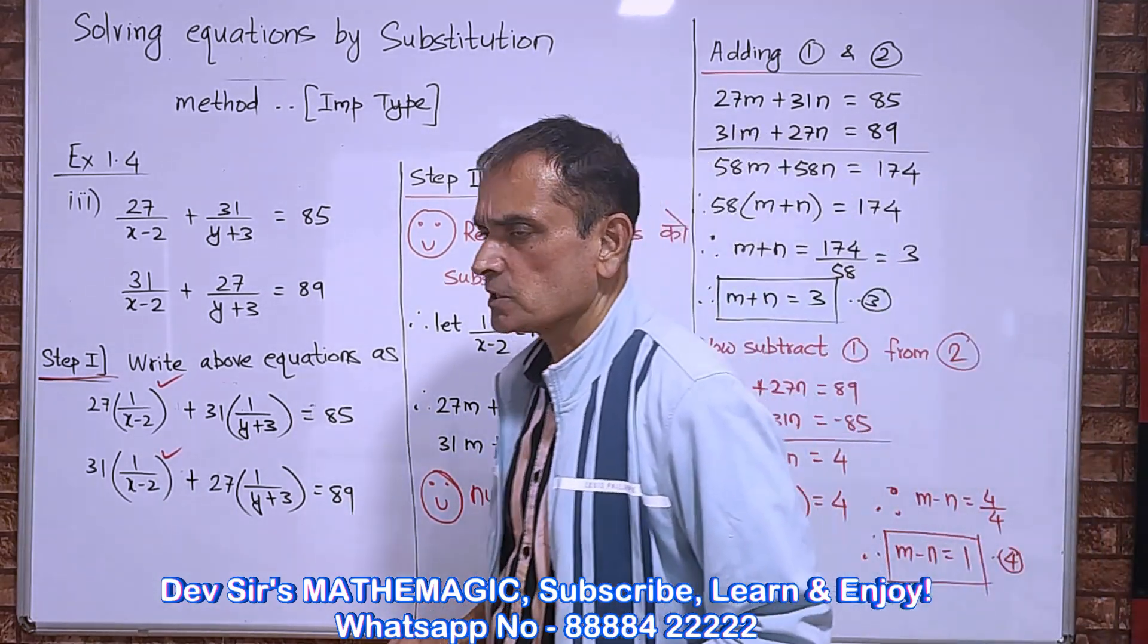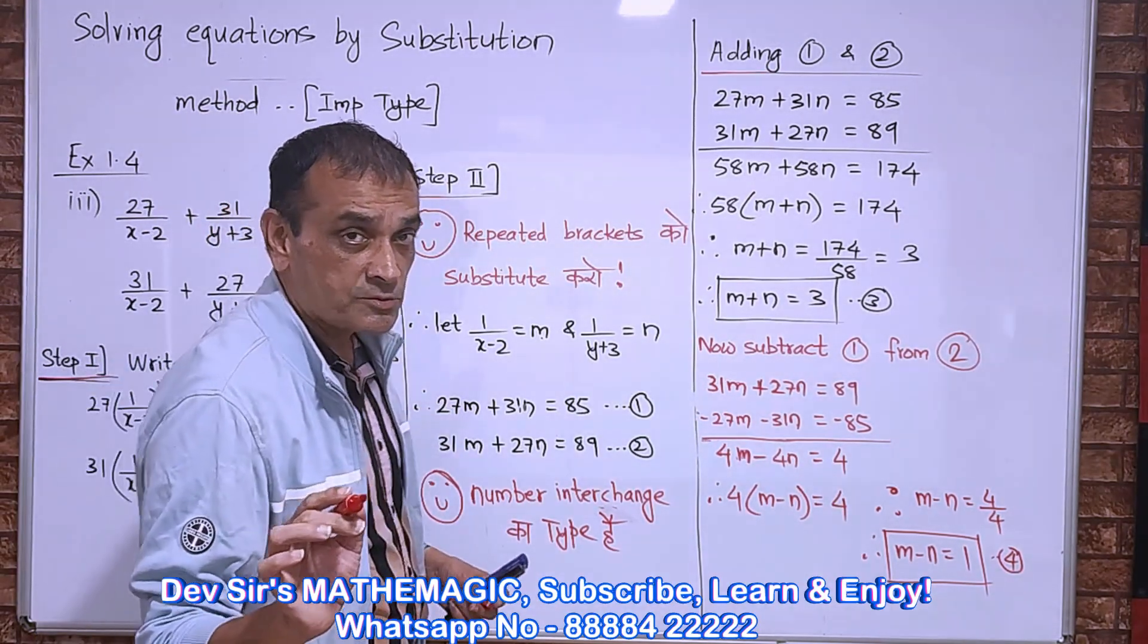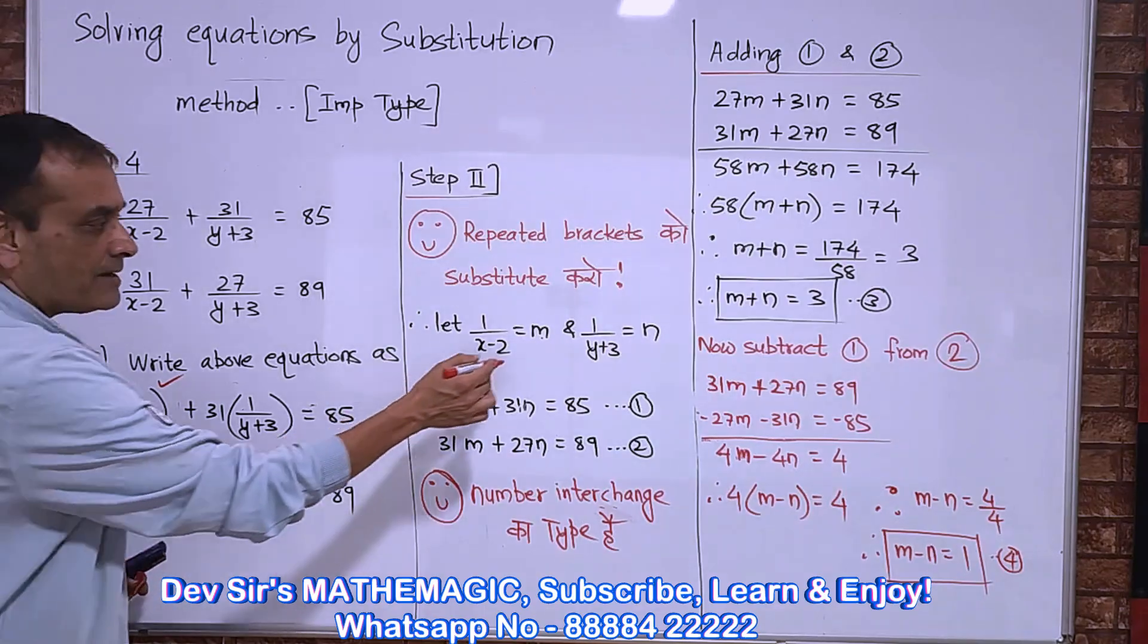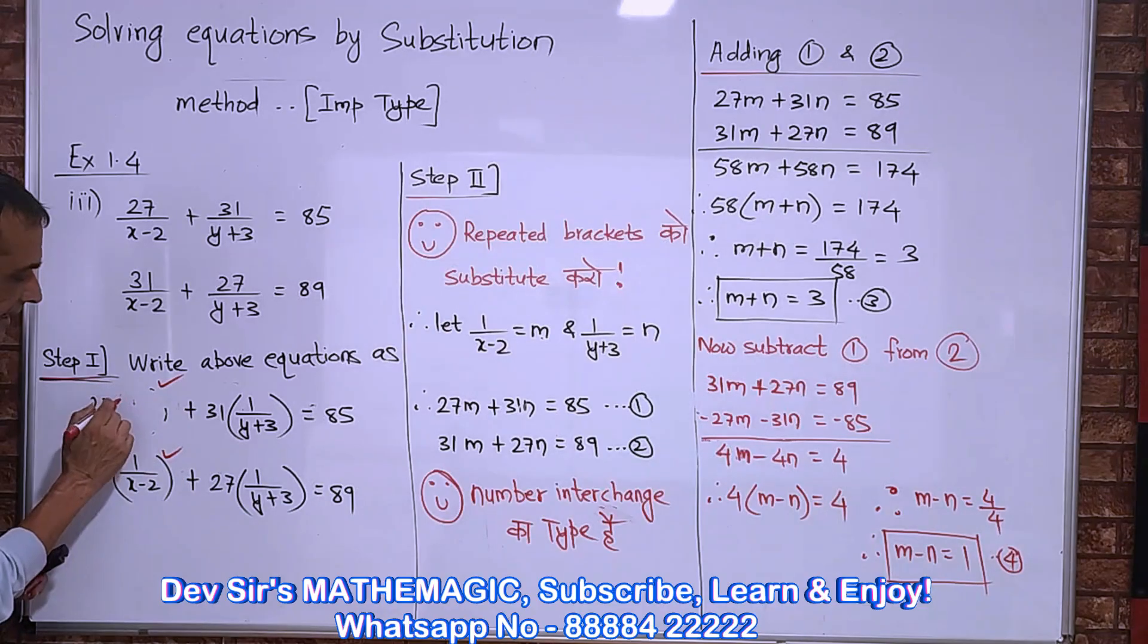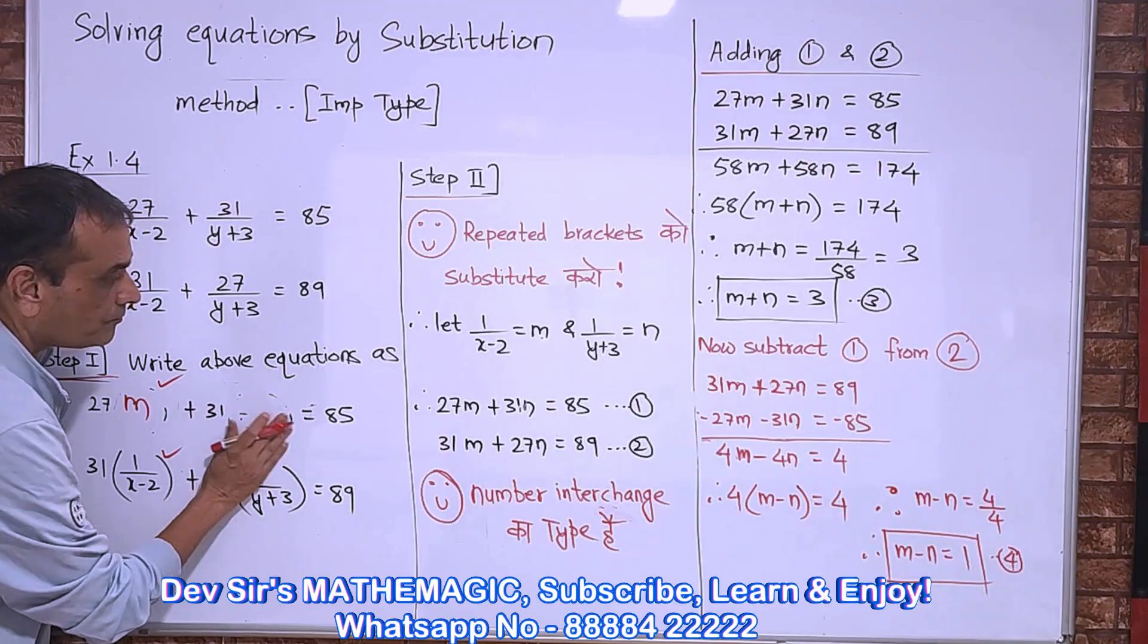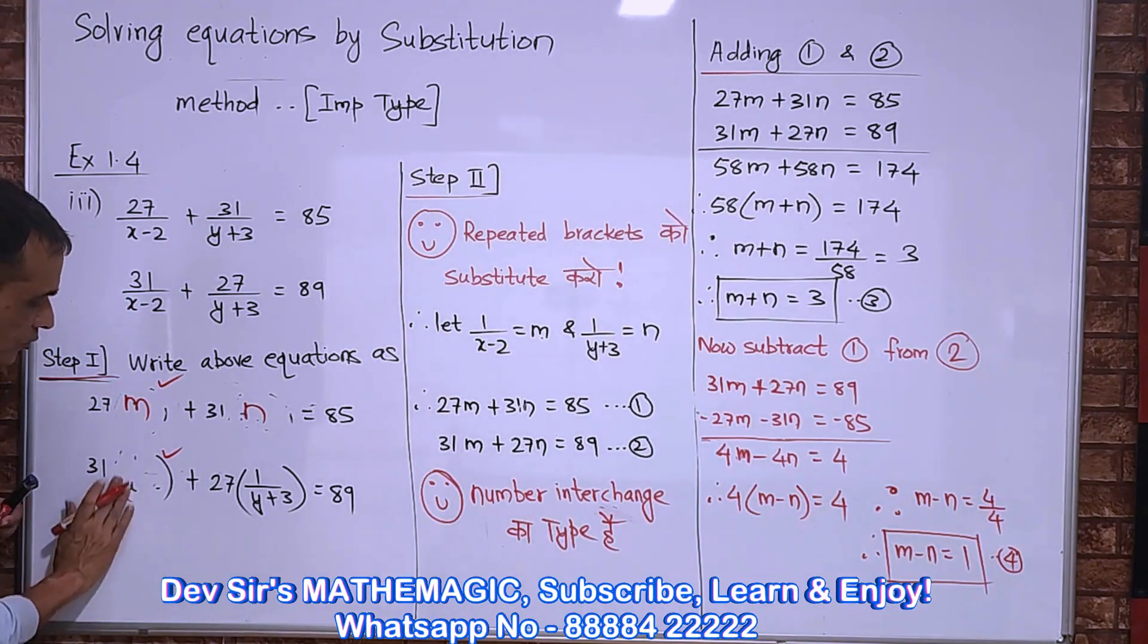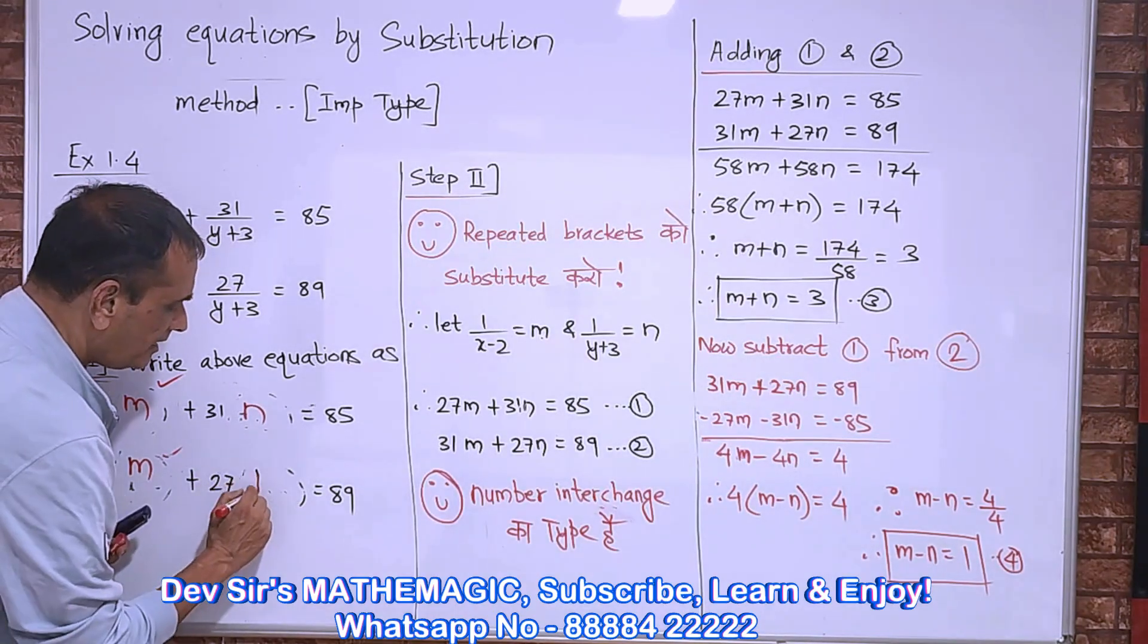Now make the substitution. Let 1 upon x minus 2 equal to m and 1 upon y plus 3 equal to n. So in reality, 1 upon x minus 2 ke jagah, m aayega. 1 upon y plus 3 ke jagah, n aayega. Same thing - 1 upon x minus 2 ke jagah m aayega, 1 upon y plus 3 ke jagah n aayega.